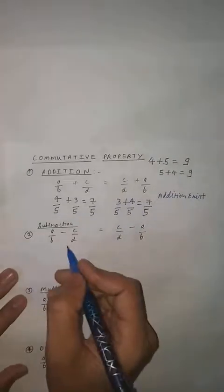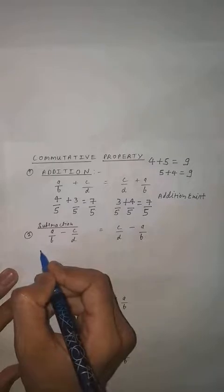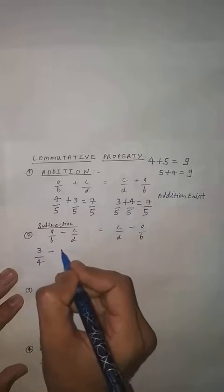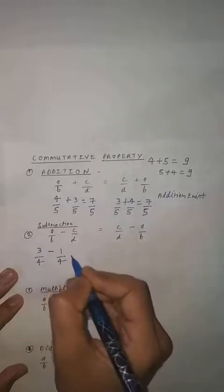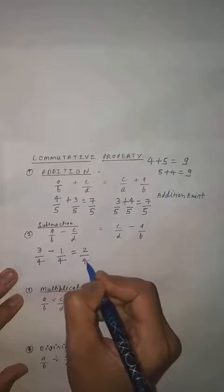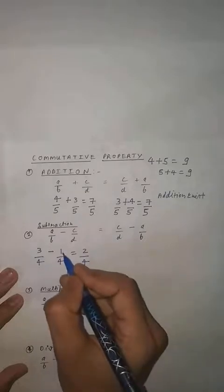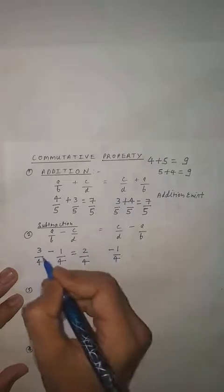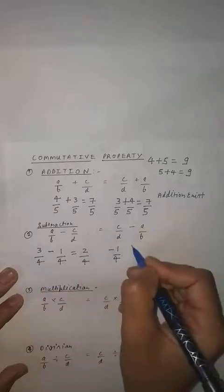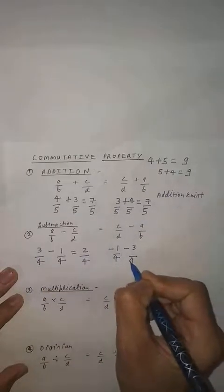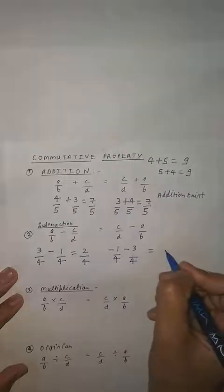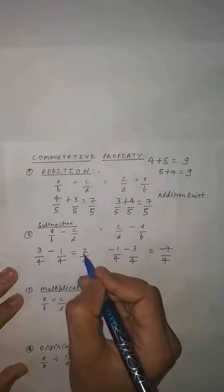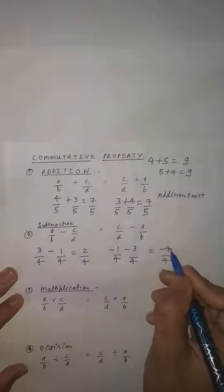Now we will check subtraction. Let A by B equal to 3 by 4 and C by D equal to minus 1 by 4. So this will give 2 by 4. Now again C by D is minus 1 by 4, minus A by B which is 3 by 4, so it will become minus 3 by 4. So minus 1 and minus 3 become minus 4, giving minus 4 by 4. Here result is 2 by 4 and here result is minus 4 by 4.